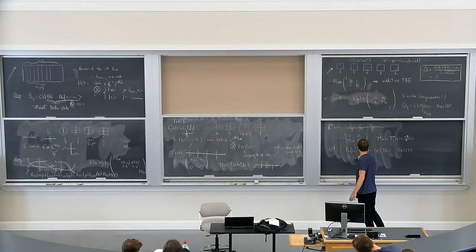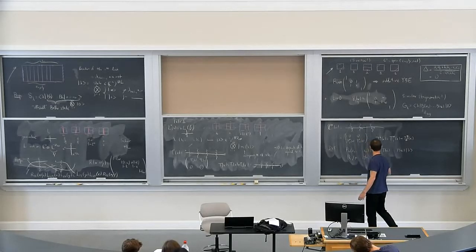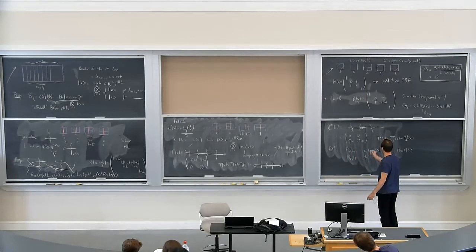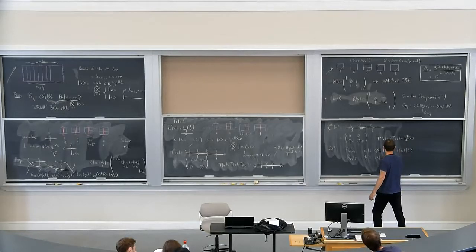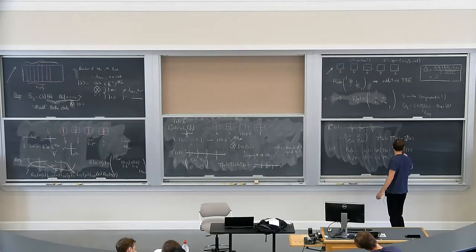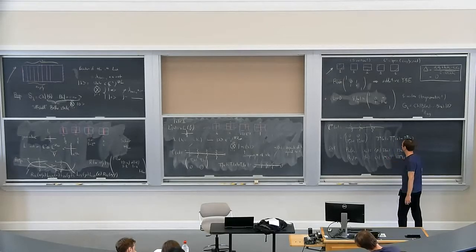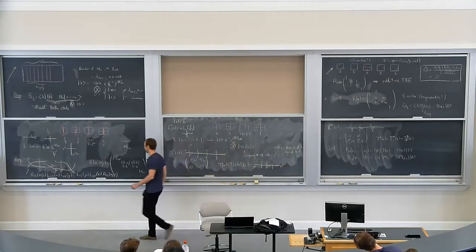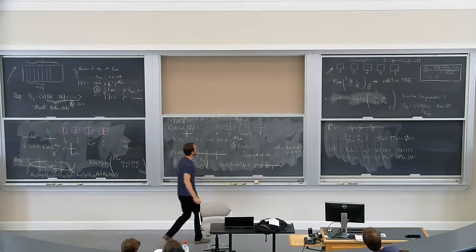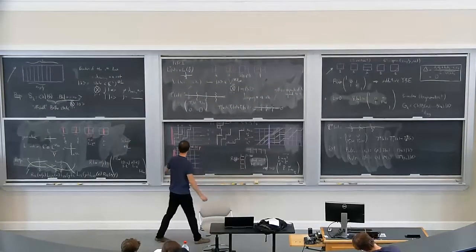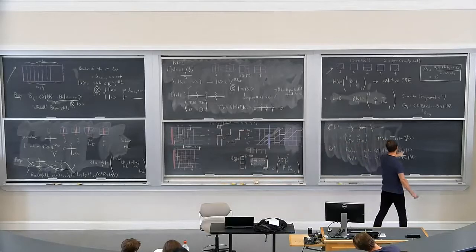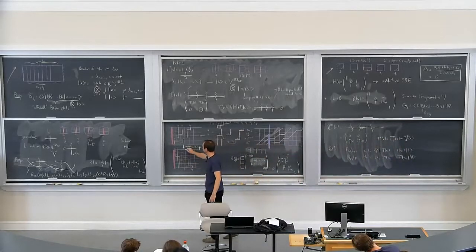Let's define the transfer matrices. There will be two of them: T and T-star. So T will be the one where you use L weights everywhere, and all these vertical spaces are copies of this infinite-dimensional space.